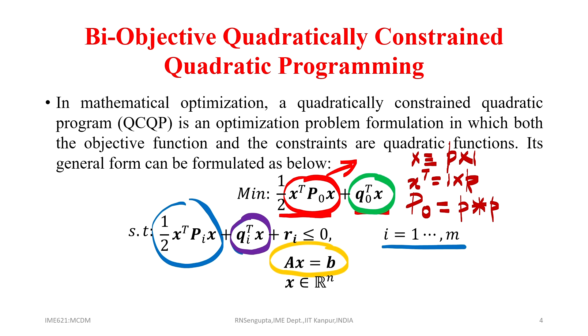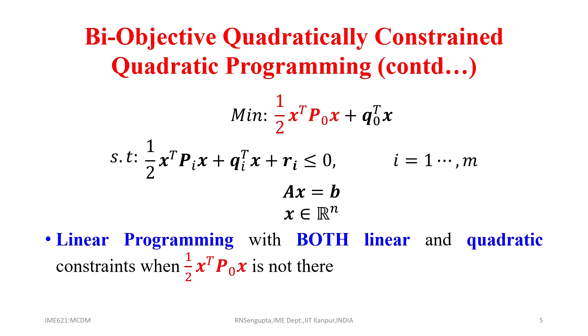In mathematical optimization, quadratically constrained quadratic programming (QCQP) is an optimization problem formulation in which both the objective functions and the constraints are quadratic functions. In its general form it is written as explained. Now, one by one, the different flavors will be presented and then a problem will be solved in detail.